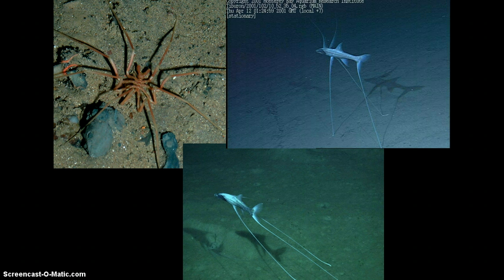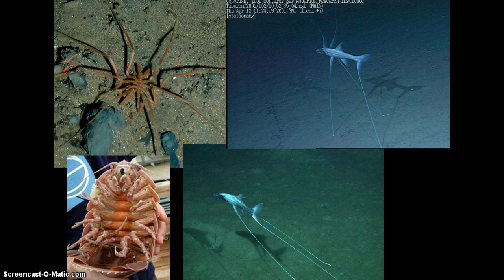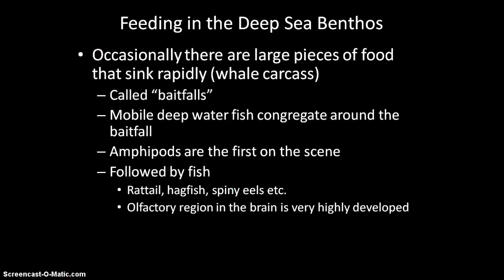These pictures show types of things found in the deep sea benthic region: a sea spider, tripod fish, and a giant isopod. Occasionally large pieces of food sink all the way to the bottom, like a whale carcass — called bait falls because they act as bait for deep sea creatures. Animals come to the bait fall in a certain order: amphipods first, then fish. They can find their way to this piece of meat because they have a really well-developed sense of smell.